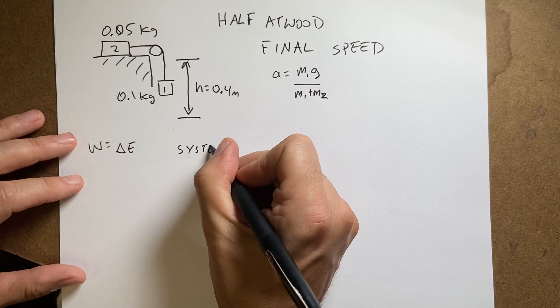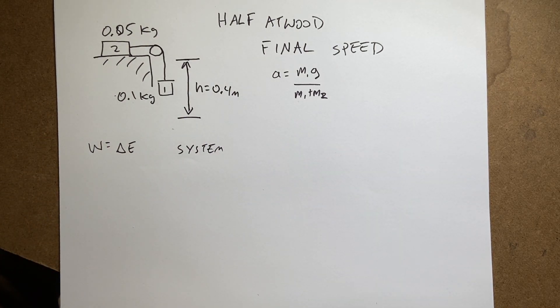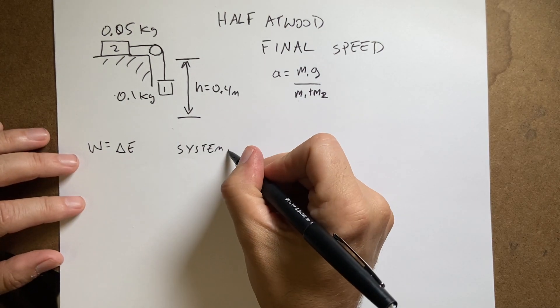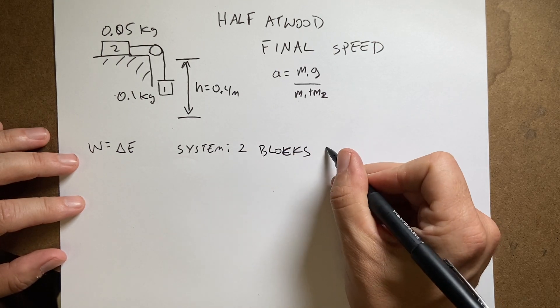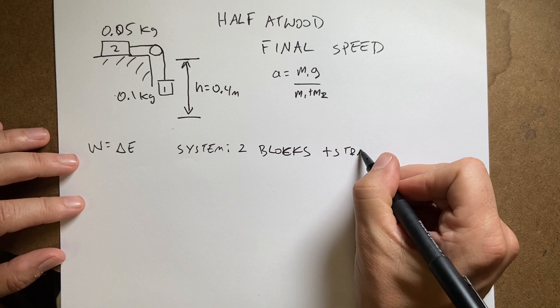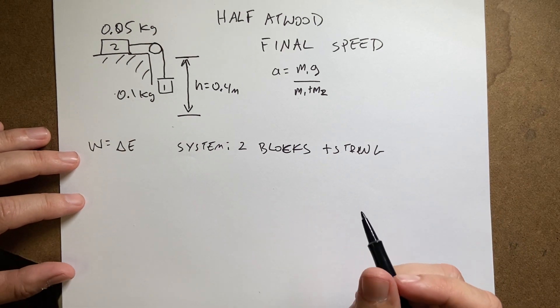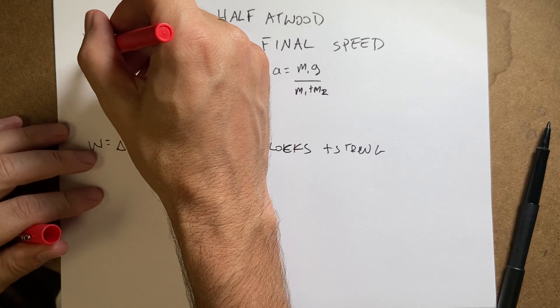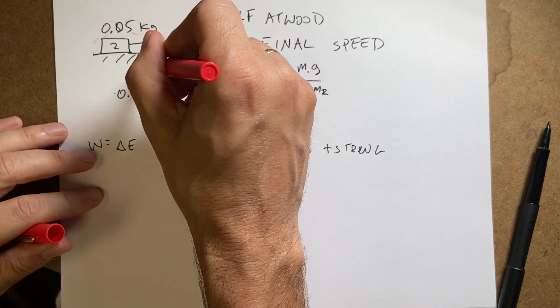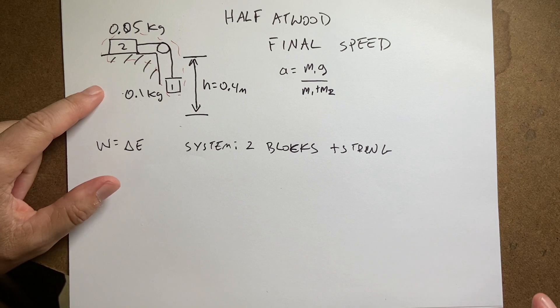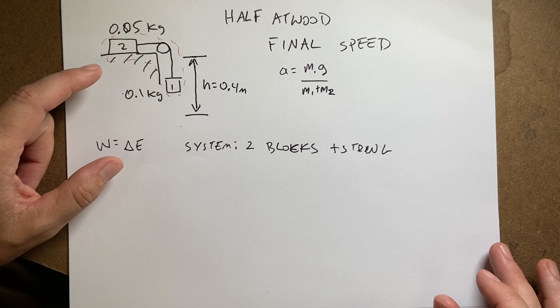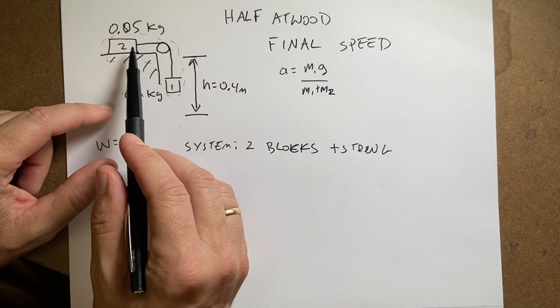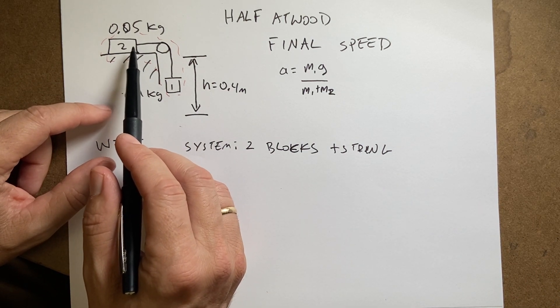So the work is the change in energy. And my system, let's see what should I pick as my system. I'm going to pick the two blocks plus the string as my system. So that means all of this is my system that I'm thinking about the energy. So the first thing I need to think of is what forces do work on this system? What forces are acting on the system? The tension isn't acting on the system, it's an internal force. So there's no work done by tension.